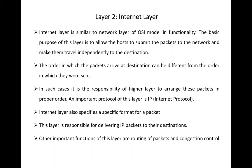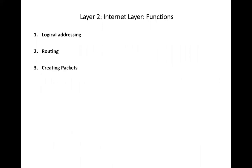The second layer is the internet layer. The internet layer of TCP/IP is exactly similar to the network layer of the OSI model in functionality. Its basic purpose is to divide the data into the form of packets, establish the route — meaning finding the shortest route from source to destination — and handle logical addressing. These three main functions are logical addressing, routing, and creating the packets.